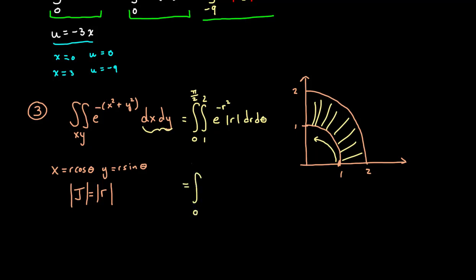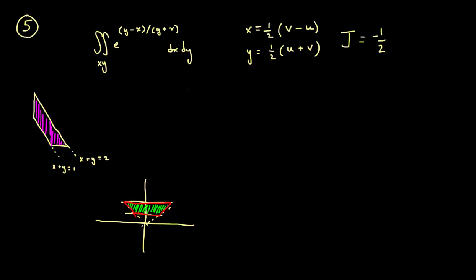And then in example five, if you recall, we let x equals one half quantity v minus u, and y equals one half quantity u plus v. We found the jacobian to be negative one half, and then we ended up using the absolute value of that. So when we translated this, we ended up with e to the u divided by v power, then we took the absolute value of the jacobian, and du dv.